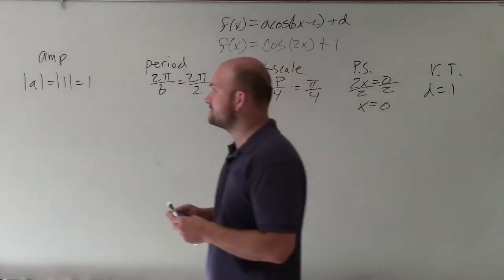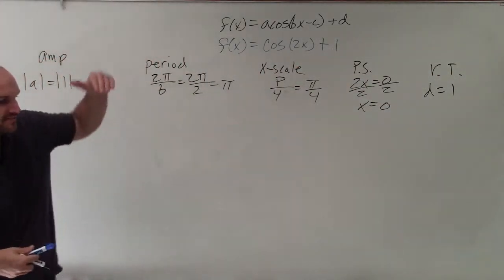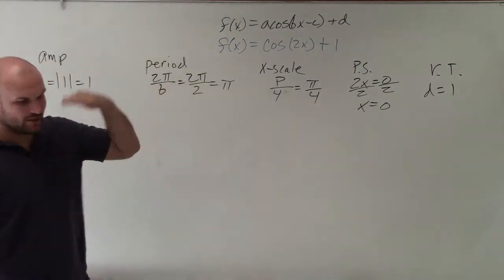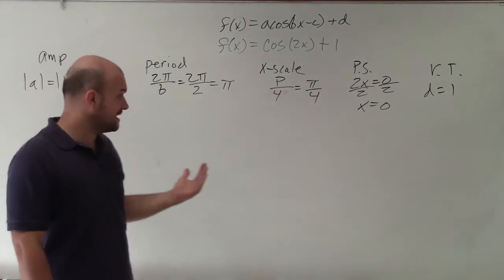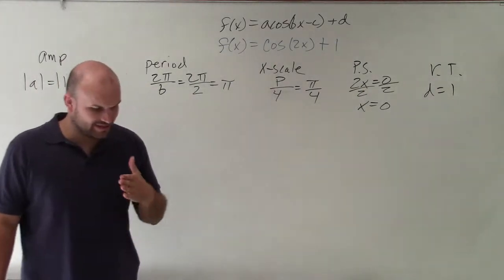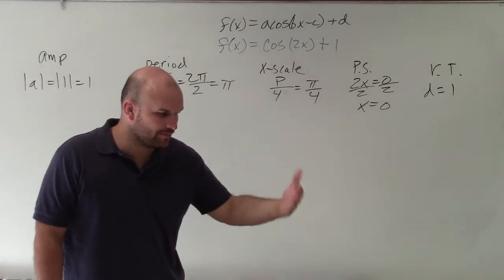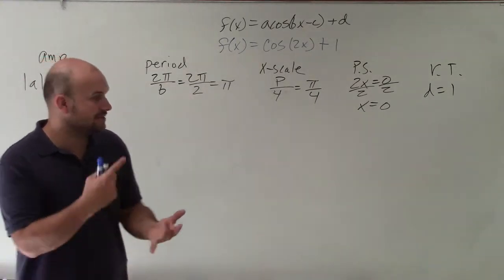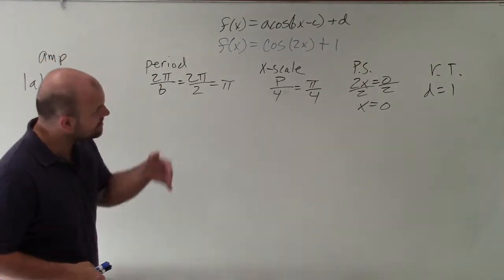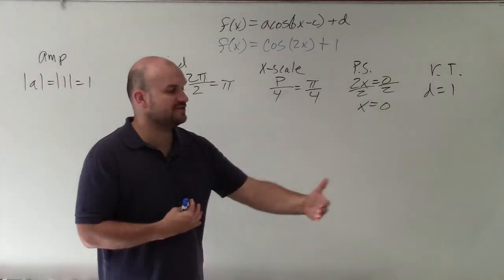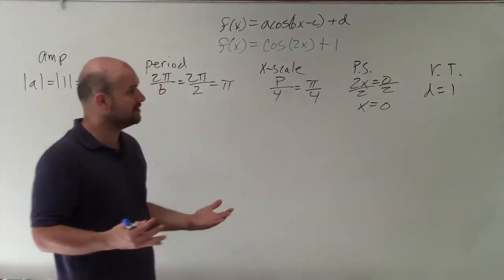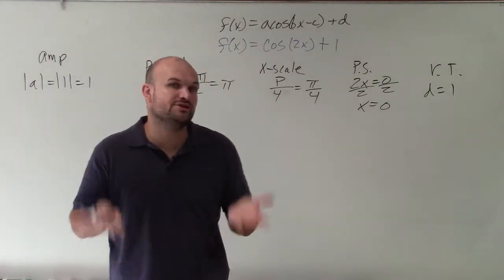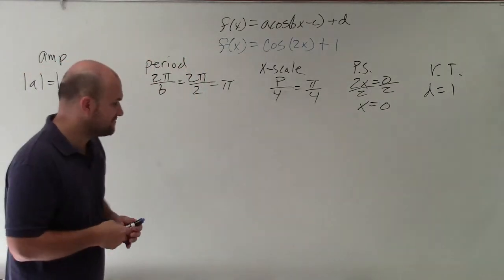To quickly go over all this information again, amplitude is going to be the half distance from my maximum to my minimum of my graph. The period is going to be how long it takes the graph to repeat its cycle. The x-scale is going to be the distance between each important part of the cosine graph, which is our max, x-intercepts, minimum, and x-intercept. Phase shift is if we're going to be shifting the graph left or right from the initial period along the horizontal axis. And vertical transformation would be shifting it up or down based from the initial period.